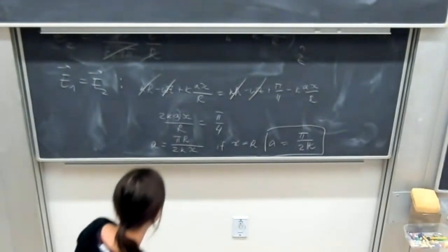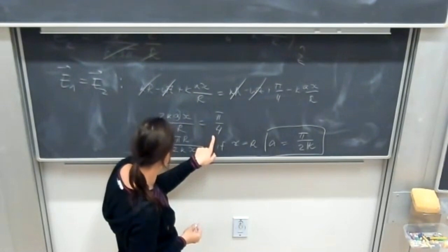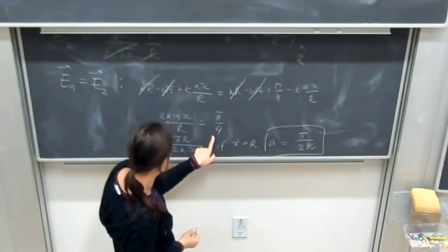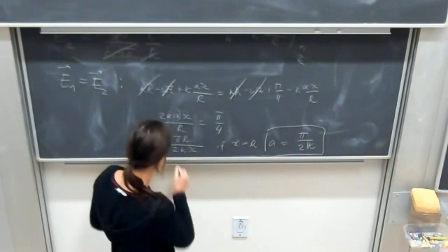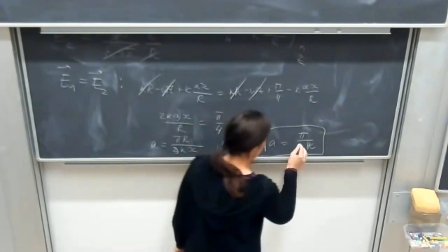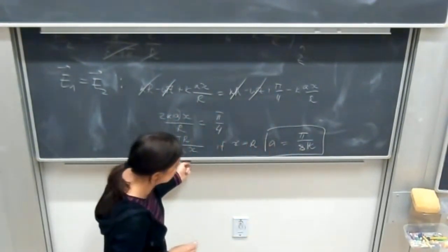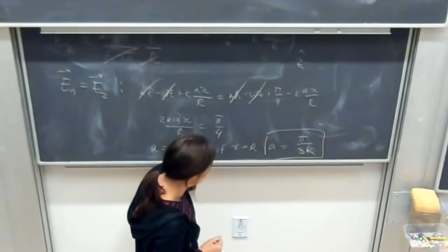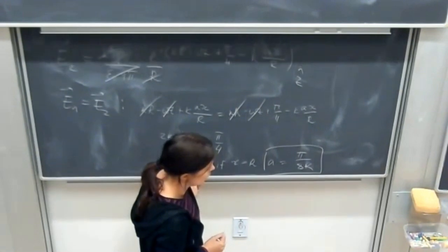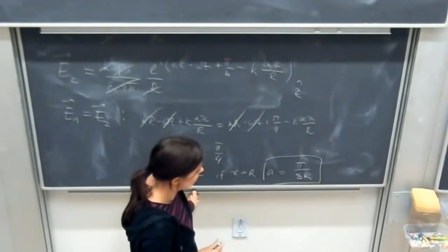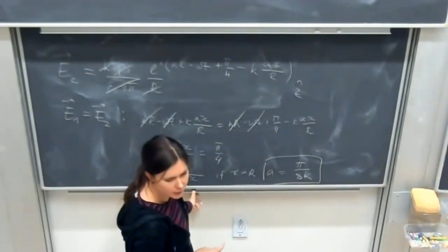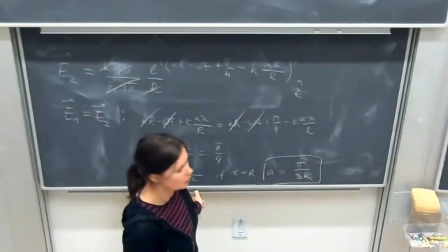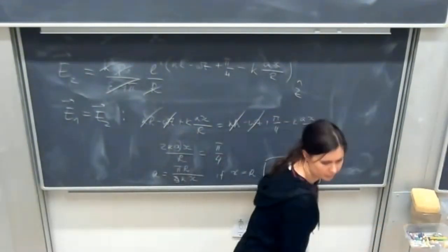Yes, I lost pi over four. So to have a field maximal, they should oscillate in the same phase. Thank you.